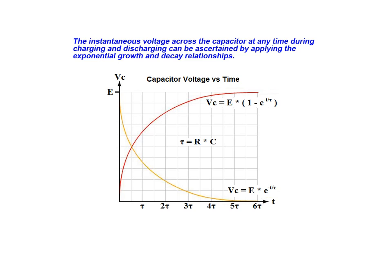In these modified equations, VC represents the capacitor voltage in volts, E represents the applied voltage in volts, R represents the series resistance in ohms, C represents the capacitance in farads, and T represents time in seconds.